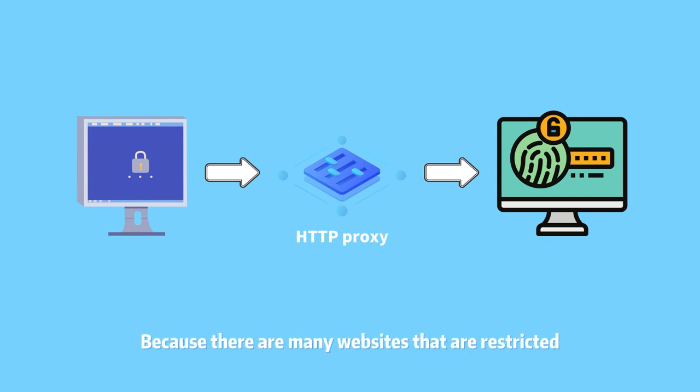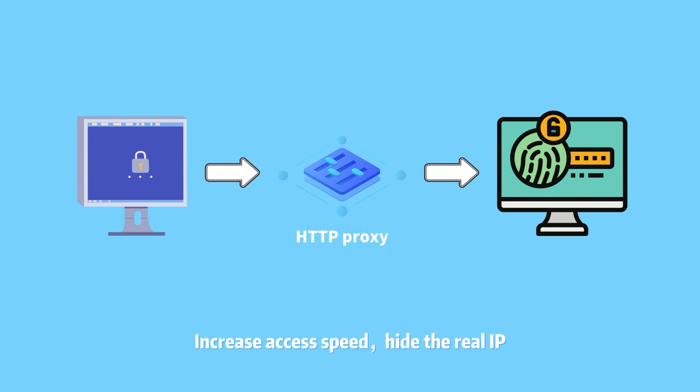Because there are many websites that are restricted, proxies can also increase access speed and hide the real IP. Internet servers can hide their IP in this way to avoid attacks.